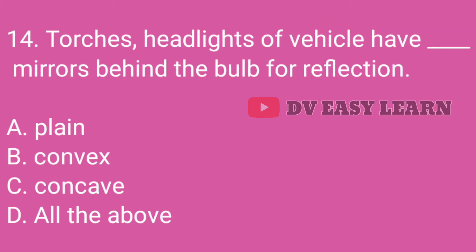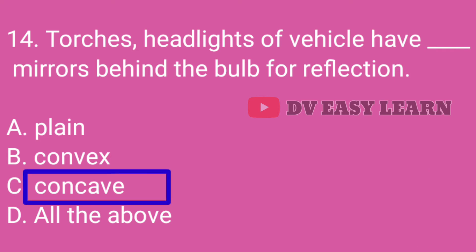Question No. 14: Torches and headlights of vehicles have dash mirrors behind the bulb for reflection. Correct answer: Concave.